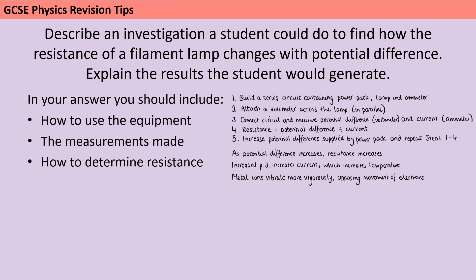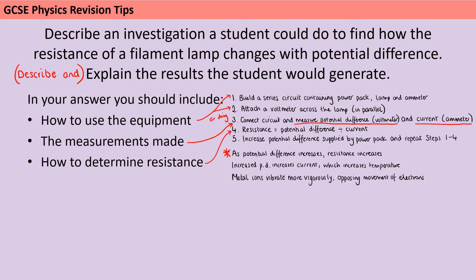Going back to the original slides to see the full rubric, there is quite a lot required to get six marks. For a level three answer you need to have covered all aspects of the question — here that involves three separate things in the method, plus explaining the results, which also requires you to describe them. You need to have said something about how to use the equipment, the measurements made (voltmeter for potential difference, ammeter for current), how to determine resistance (including the calculation), and that potential difference increasing leads to resistance increasing — making sure to say resistance, not current, otherwise you're not answering the actual question.